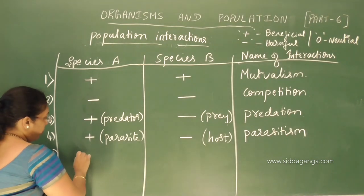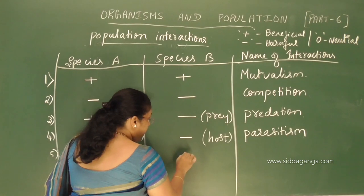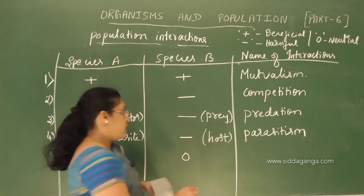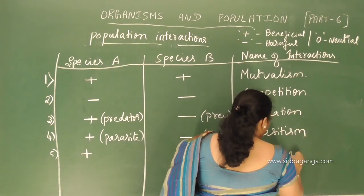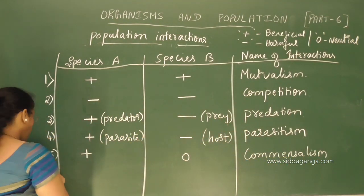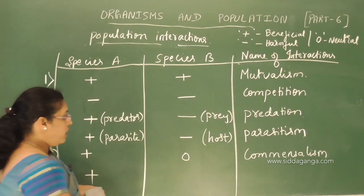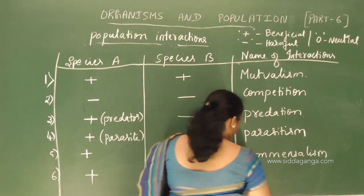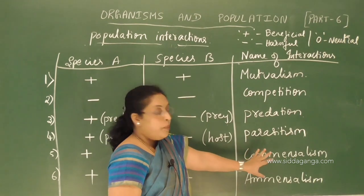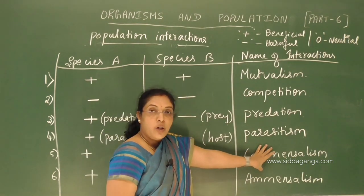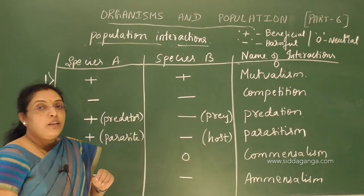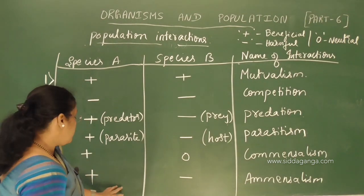Then we have commensalism: one species is benefited and the other one is neither harmed nor benefited. Example: the orchid growing as an epiphyte on a mango tree. Amensalism: one species is harmed and the other one is neither harmed nor benefited. Example: Penicillium notatum prevents the growth of Staphylococci.